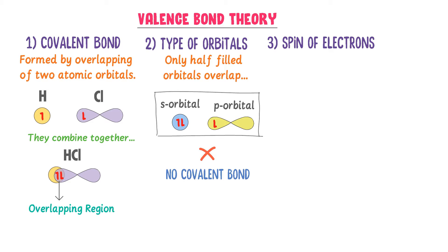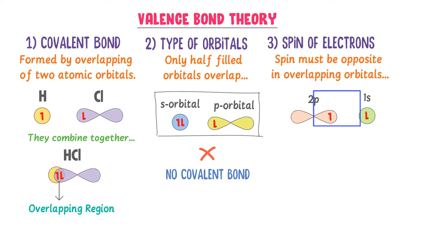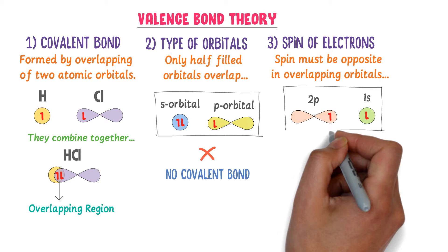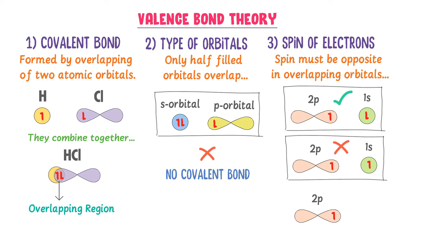The third point of VBT is the spin of electrons. It teaches that the spins of electrons in the overlapping orbitals must be opposite to form a covalent bond. For example, if the spin of the electron in the 2P orbital is upward while that in the 1S orbital is downward, the orbitals will overlap because they have opposite spins. If both electrons have the same upward spin, they will not overlap. Similarly, if one orbital is completely filled, both orbitals must be half-filled, so they will not overlap to form a covalent bond. Thus, VBT teaches us that the spin of electrons must be opposite for orbitals to overlap and form a covalent bond.